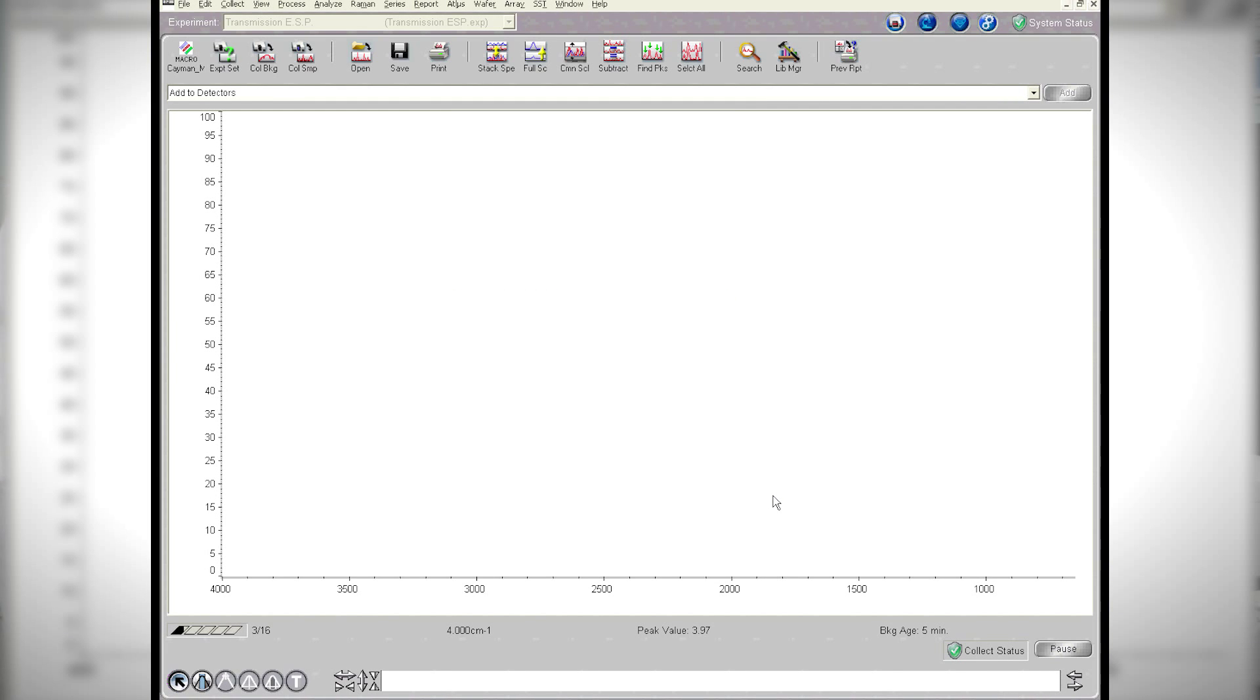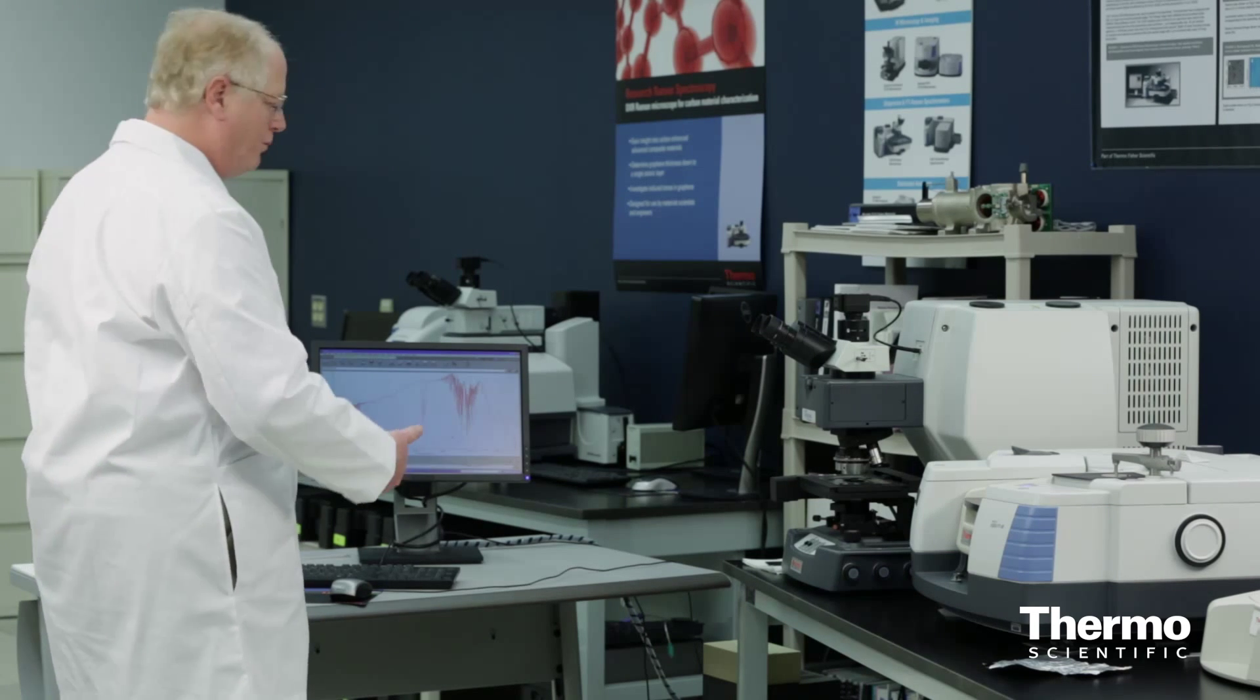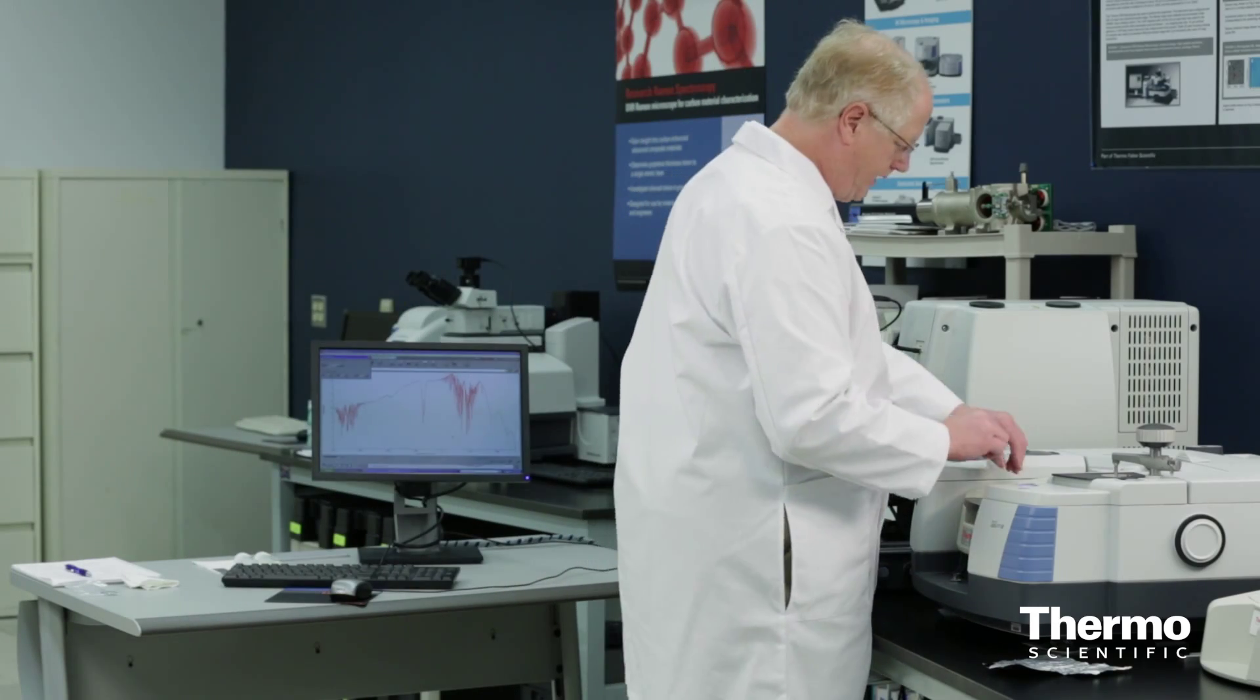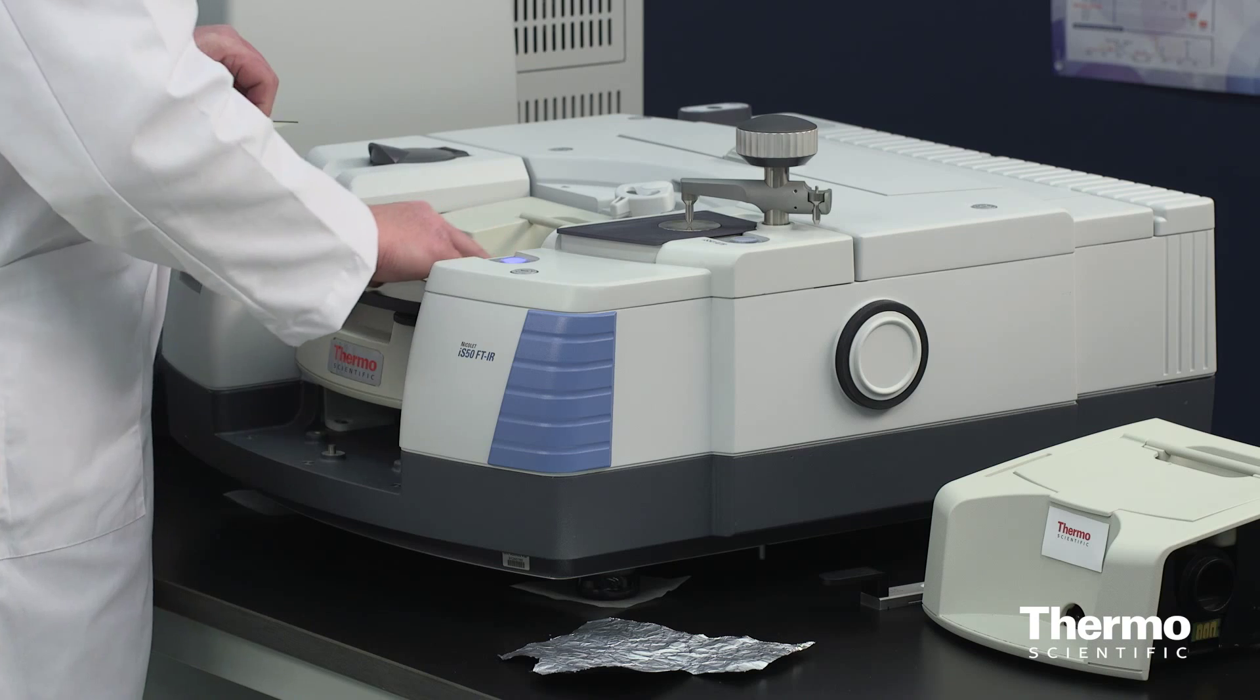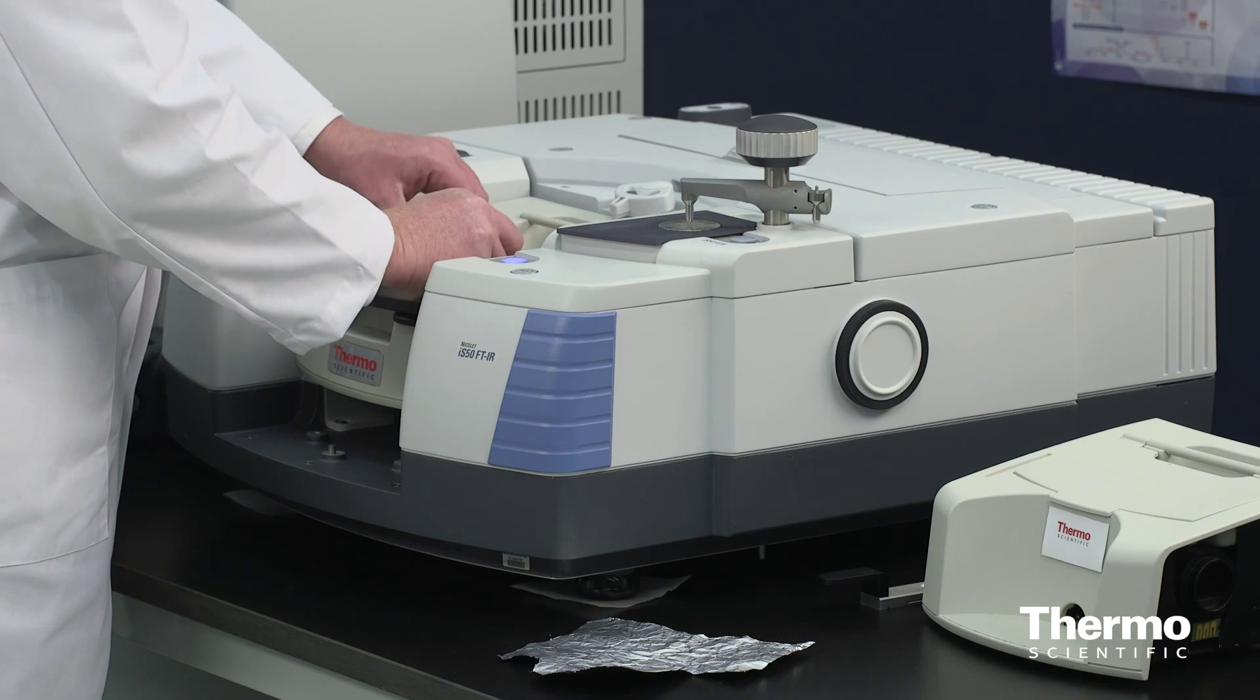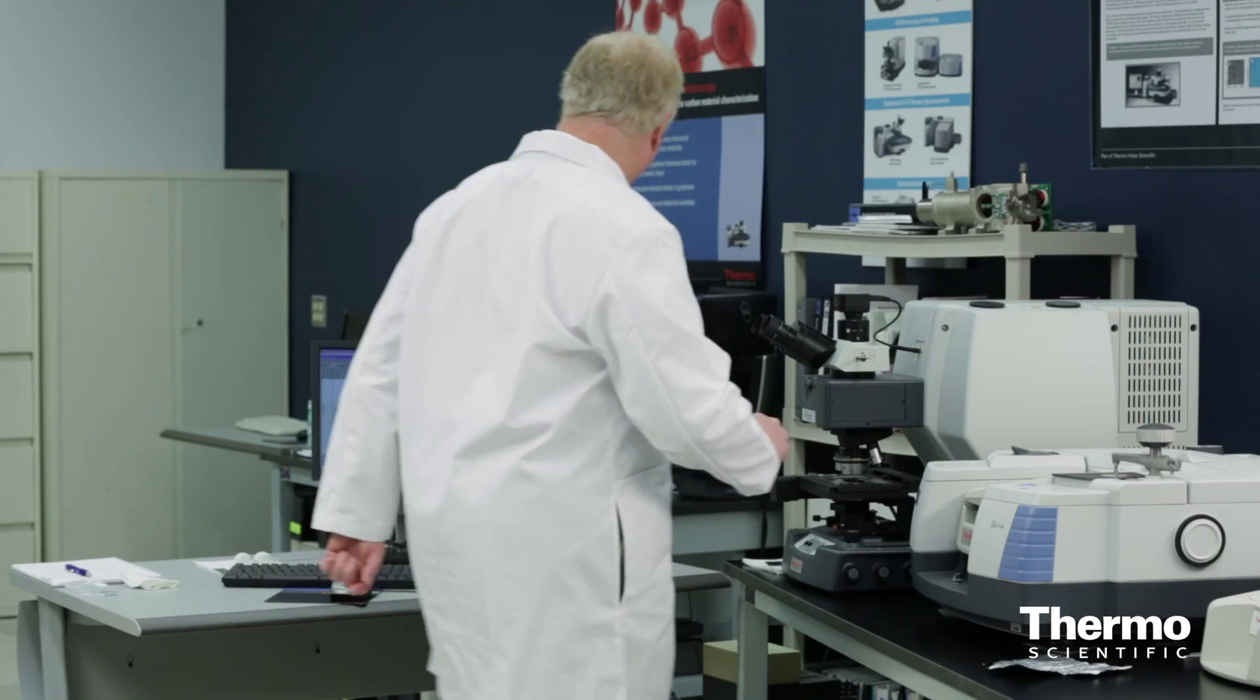This is the background being collected off of the uncoated side of the aluminum foil. And then we'll flip the foil over. Now it's completed that task, so I'll turn over my foil, lay it down and once again weight it down so that it's nice and flat across that surface.